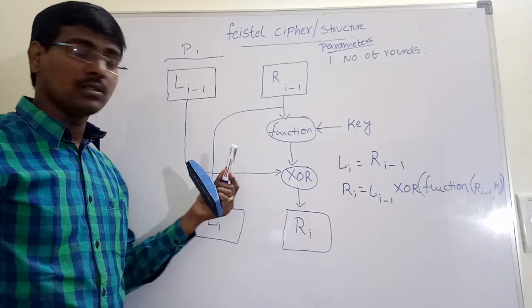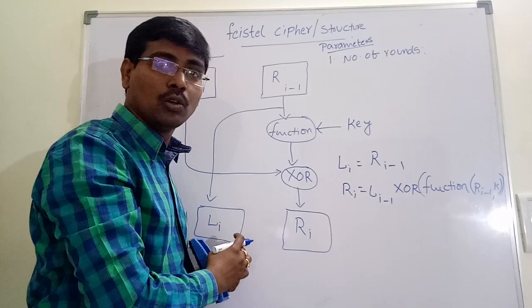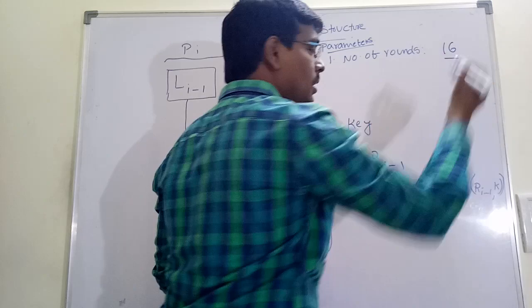That is, when the complexity increases, the attacker, it is very difficult for the attacker or cryptanalyst. So number of rounds increases, increases the security of the algorithm. General preferable number of rounds are 16. Generally, 16 number of rounds are preferable.